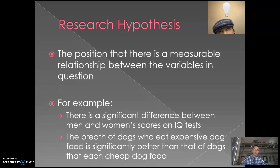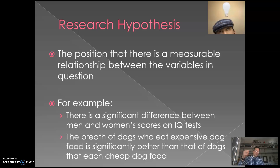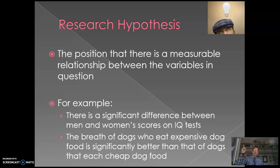From the last slide, another example: the breath of dogs who eat expensive dog food is significantly better than that of dogs that eat cheap dog food. The bottom example is a directional hypothesis — it states the breath will actually get better, meaning the variable moves in a specific direction. By contrast, the top example just states something is happening without specifying which direction.